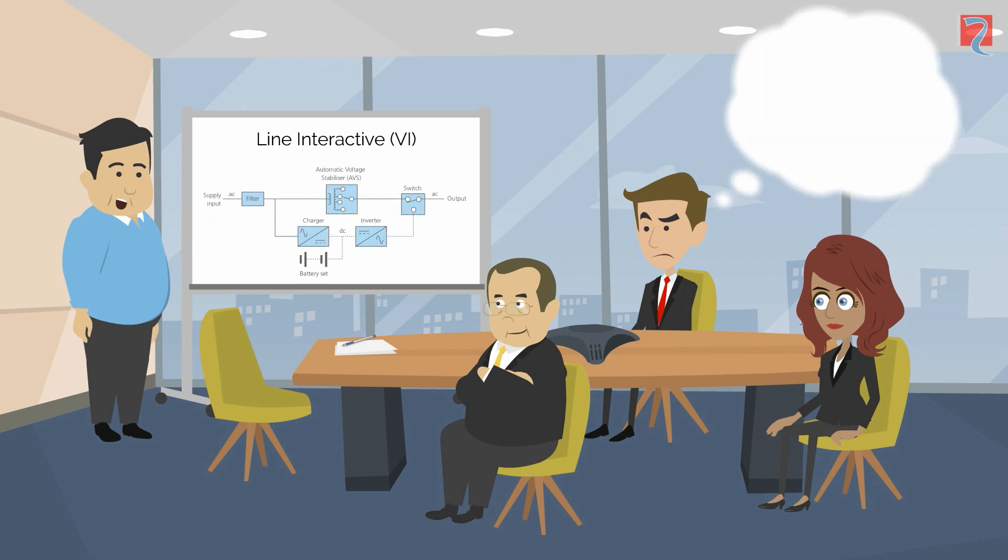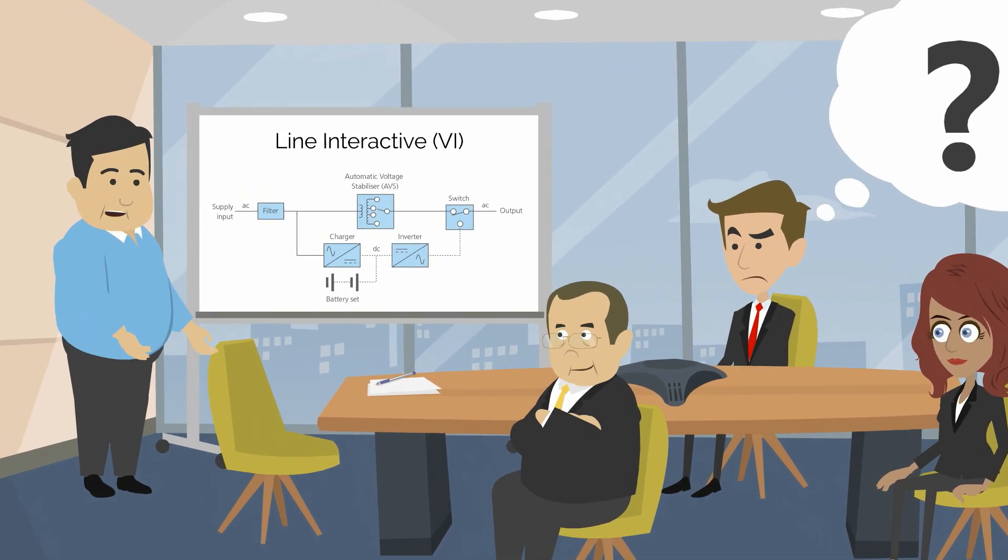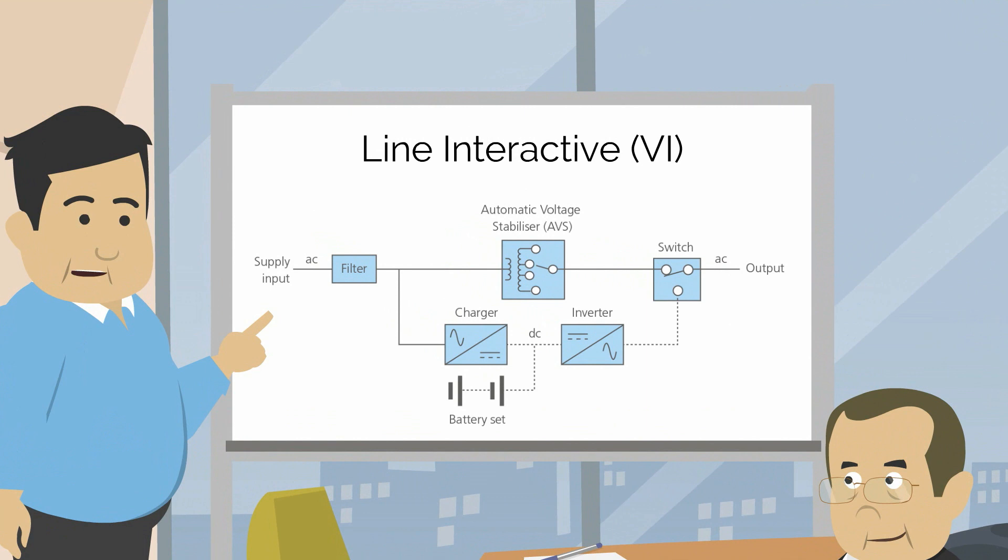The next step up in protection is a line interactive or voltage independent UPS. The line interactive design of a UPS works largely the same as an offline, but with the addition of an automatic voltage stabiliser or AVS.